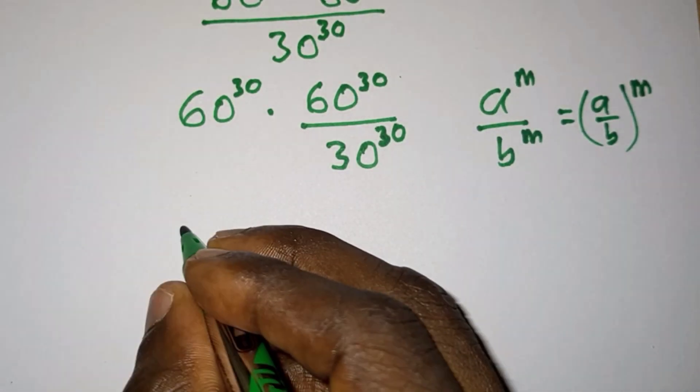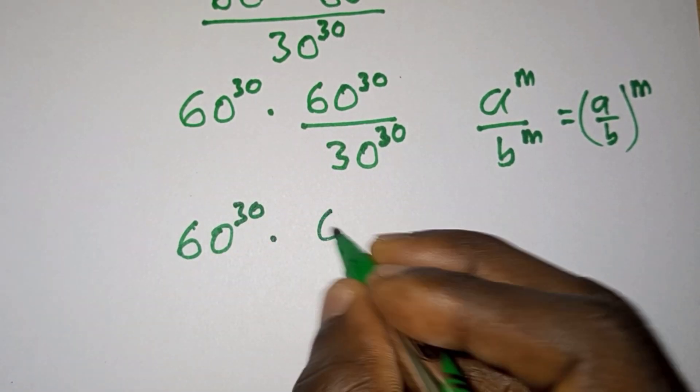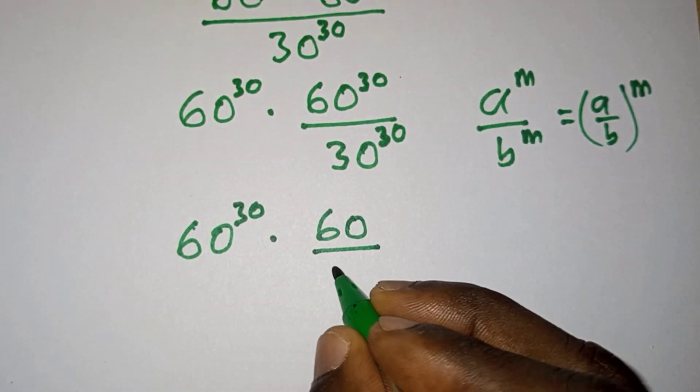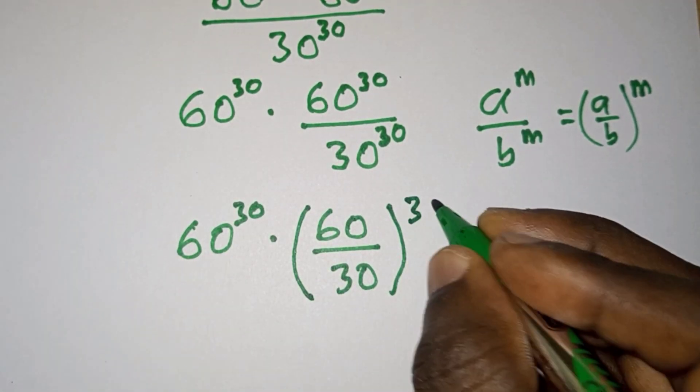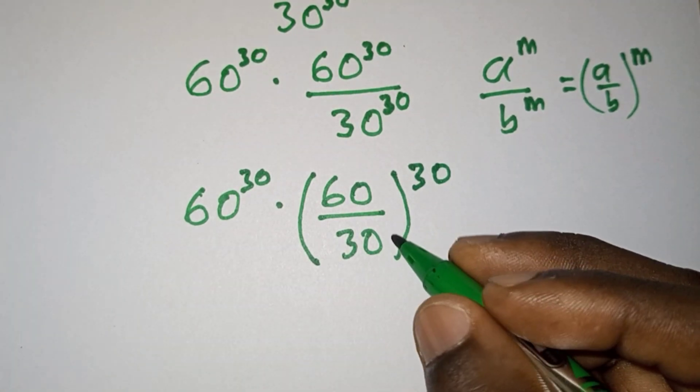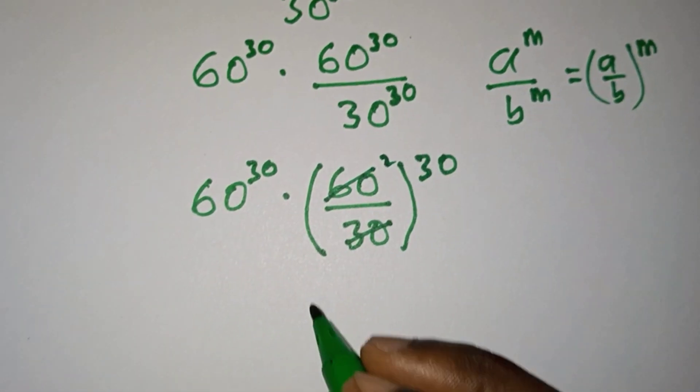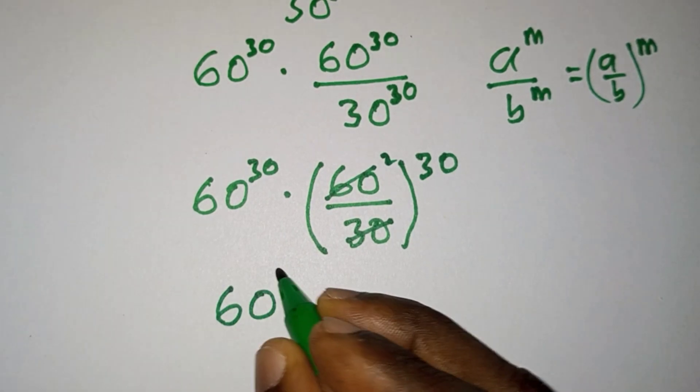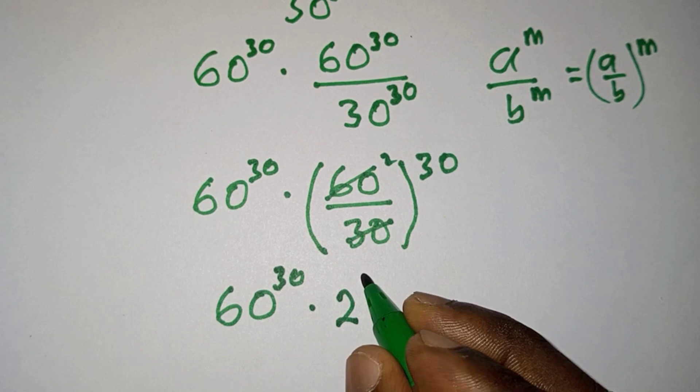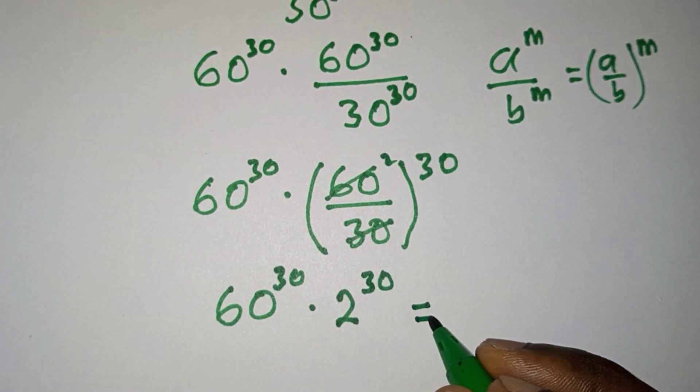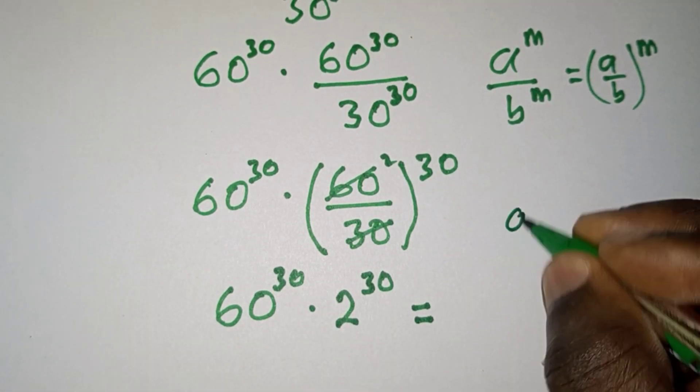And we can break what is in the parenthesis down. 30 goes into 60 two times, so we're gonna have 60 to the power 30 times 2 to the power 30, and this is equal to...